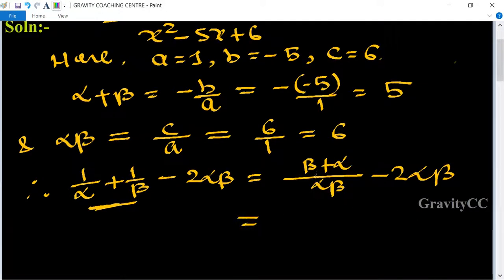The value of α + β is 5 and αβ = 6, so this becomes 5/6 - 2(6).